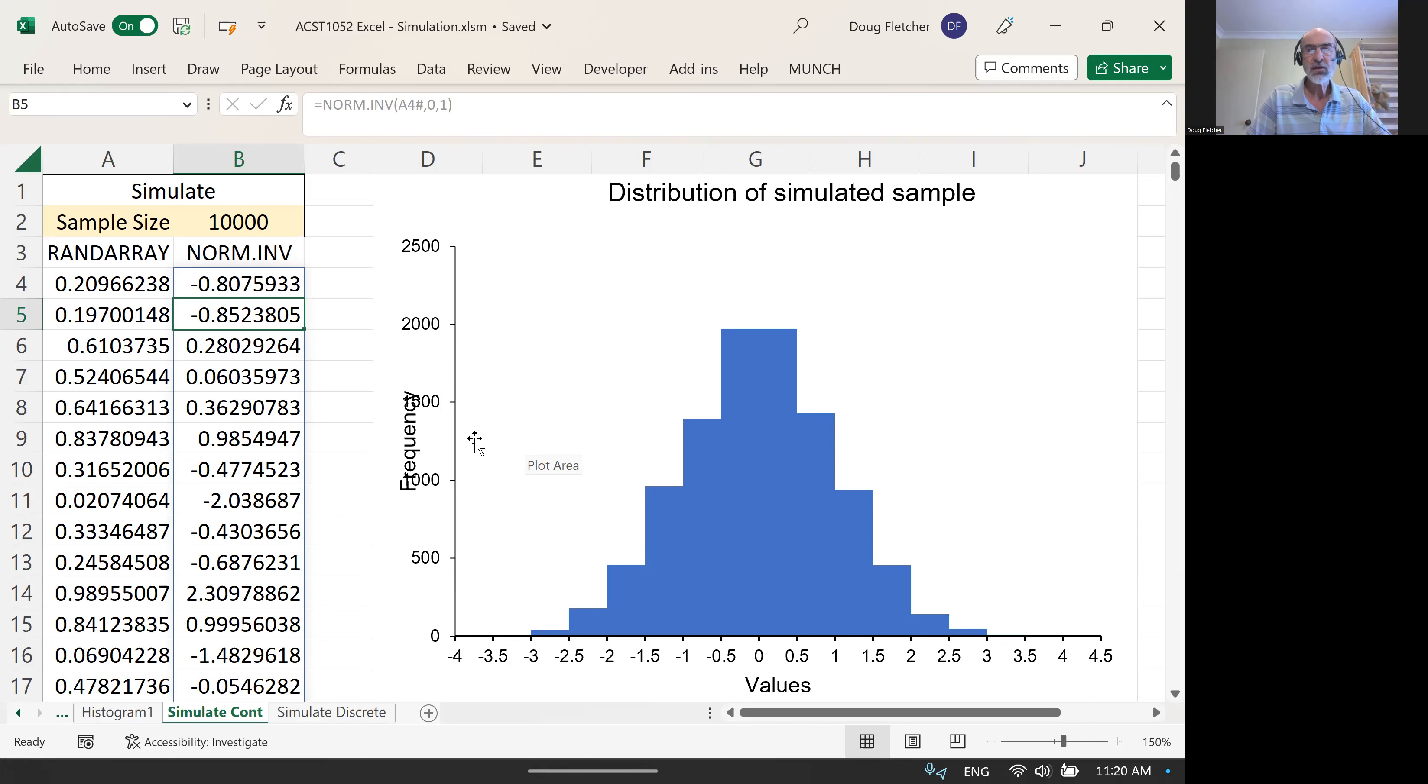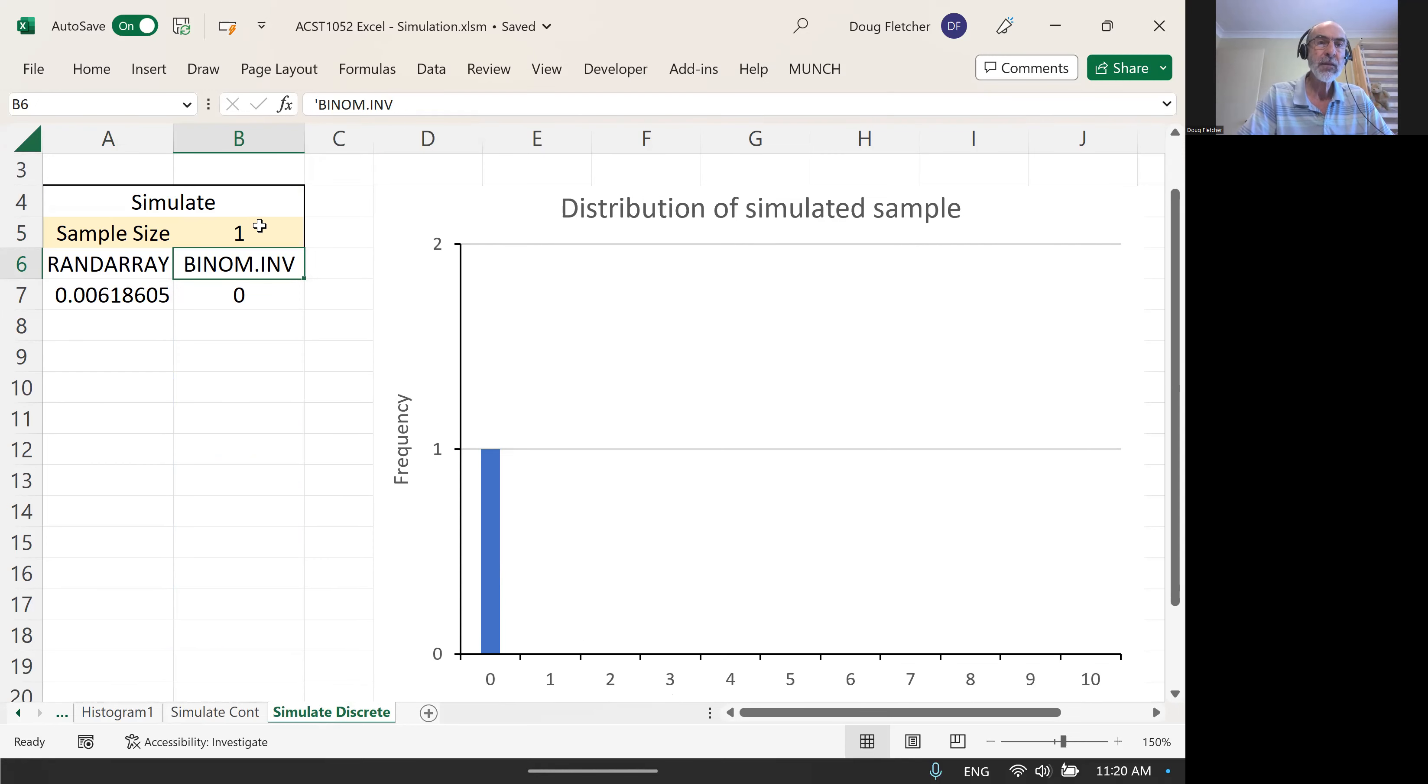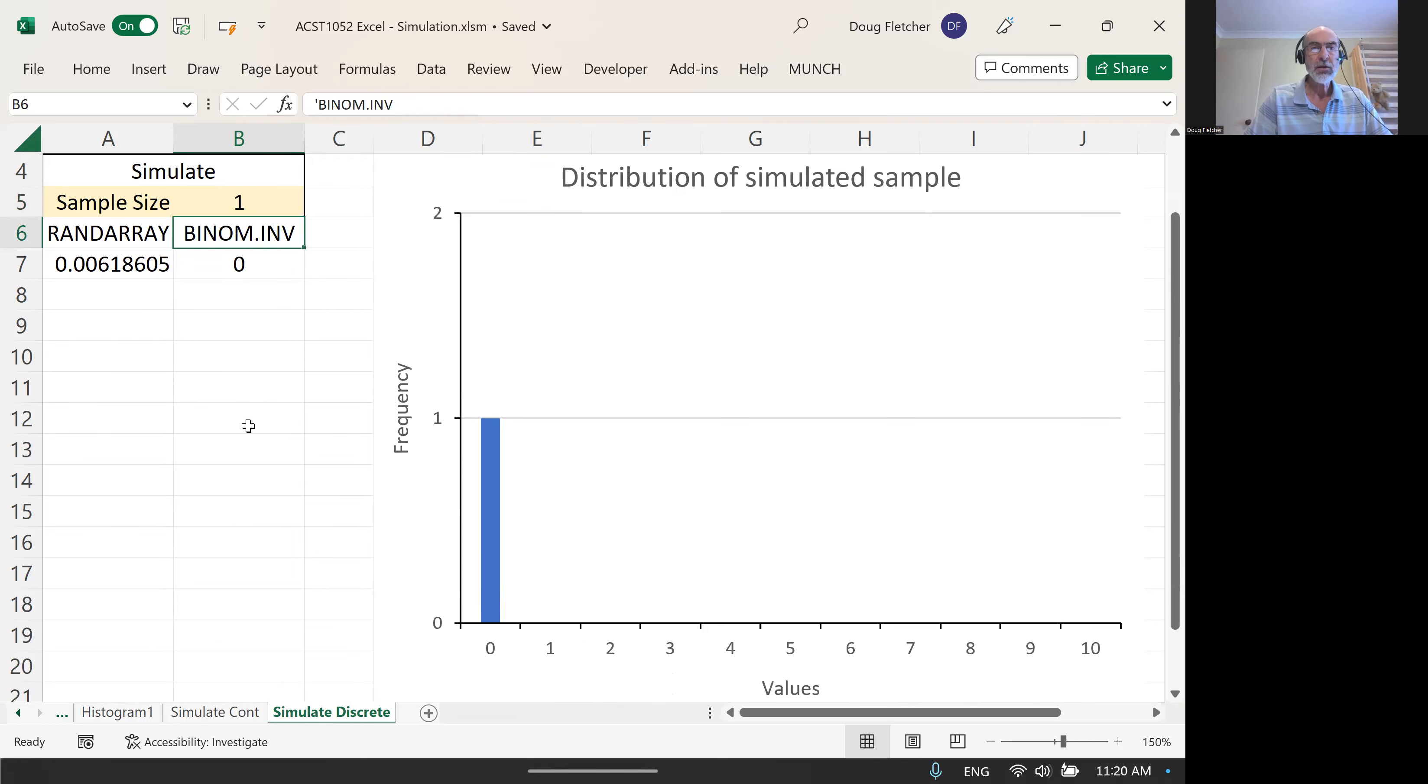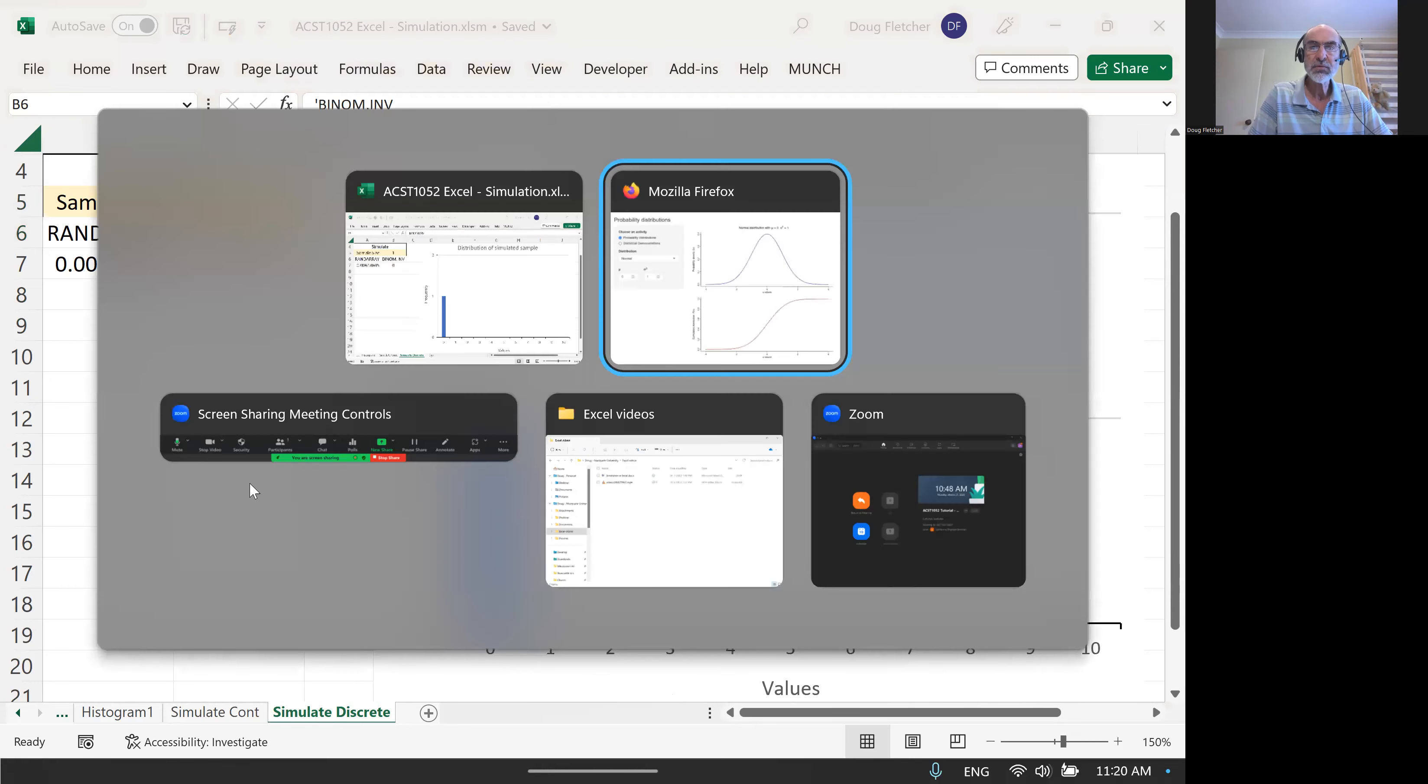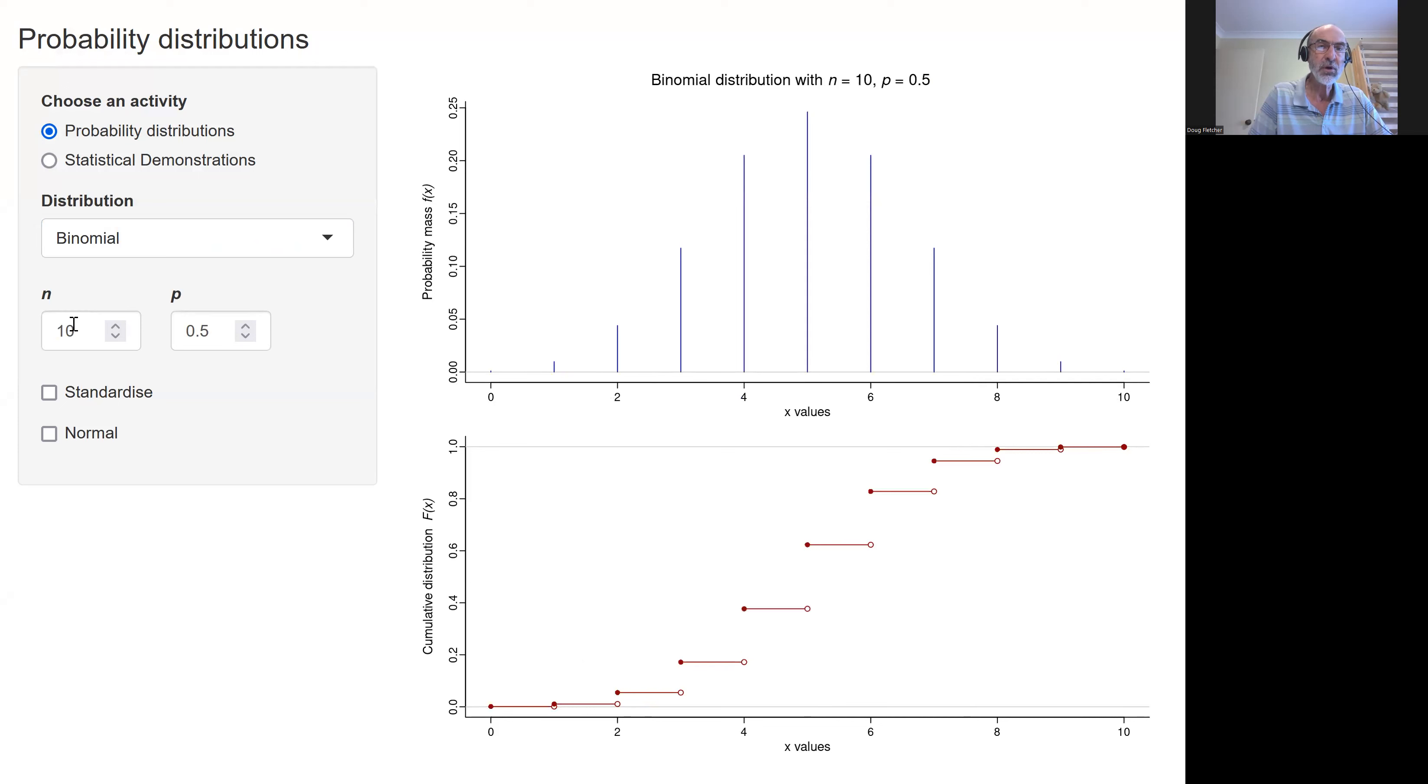It's just slightly different in relation to discrete distributions, so we'll go and have a look at those now. Here's a very similar situation looking at a discrete distribution simulation. Here I'm using a binomial distribution, and I happen to be using a binomial with sample size 10 and a probability of success of 0.3.